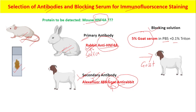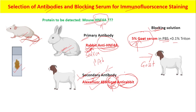So one more time: here we wanted to detect mouse HNF4-alpha in a mouse section. The primary antibody is anti-HNF4-alpha and it should come from any animal other than mice, such as rabbit — so rabbit anti-HNF4-alpha. The secondary antibody should be against the source of the primary antibody, so it will be anti-rabbit. The color and source of secondary antibody we selected is Alexa Fluor 488 goat anti-rabbit. The blocking solution should contain 5% goat serum in PBS plus 0.1% Triton, because the secondary antibody source is goat. I hope this video was helpful.